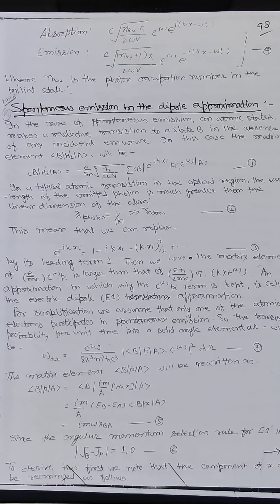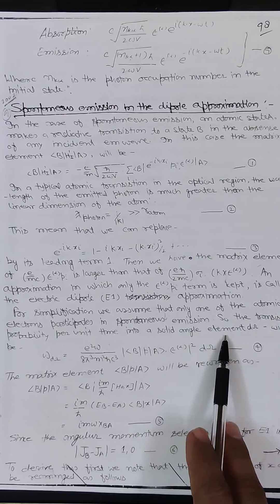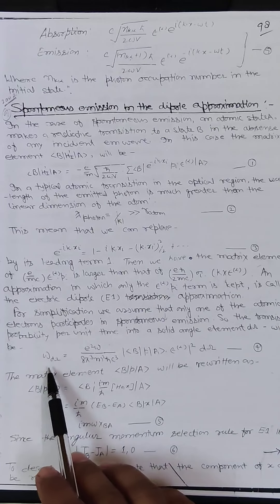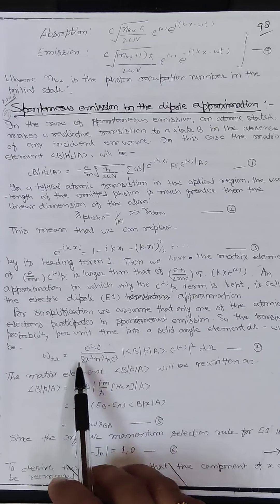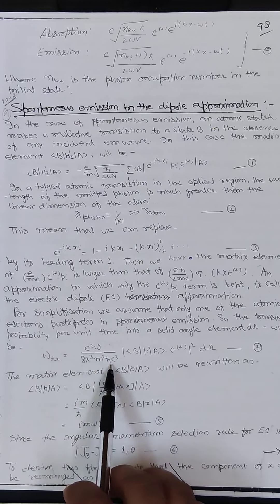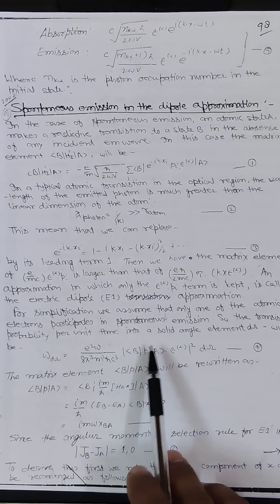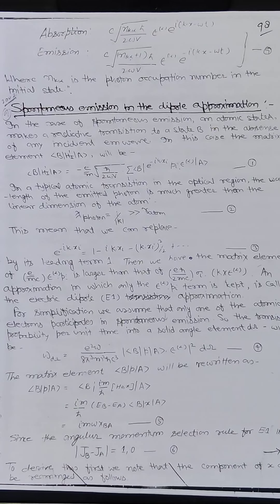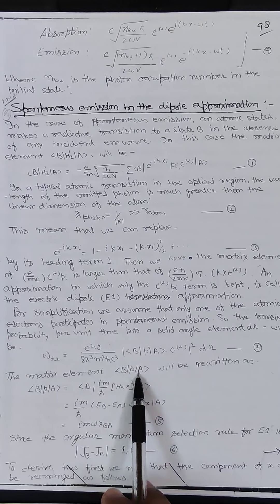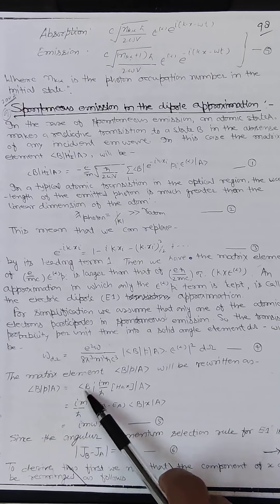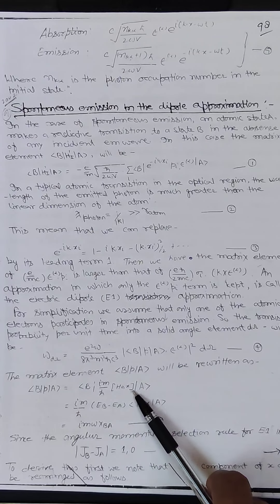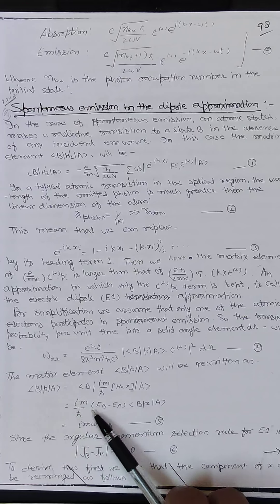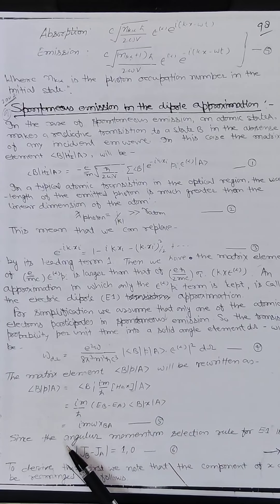For simplification we assume that only one atomic electron participates in the spontaneous emission. The transition probability per unit time into a solid angle element dΩ is: dω = (e²ω / 8π³m²ℏc³) |⟨b|p|a⟩|² dΩ. The matrix element ⟨b|p|a⟩ can be written as (im/ℏ) ⟨b| [H₀, x] |a⟩ = (i/ℏ)(E_b - E_a) ⟨b|x|a⟩ · m = iмω x_{ba}.